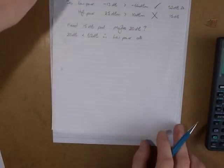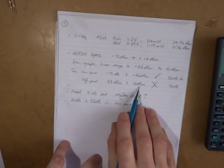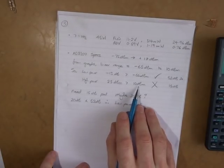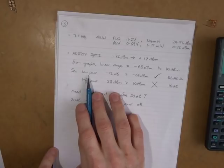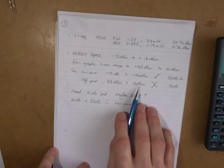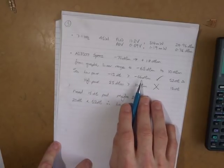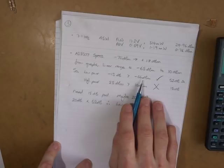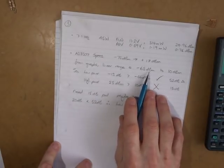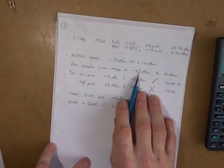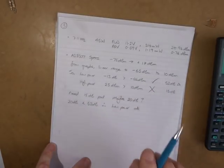Why was that useful? Because we wanted to make sure we weren't going to exceed the maximum allowable limit at the forward port or reflected port. We wanted to make sure we were also going to be detectable. We had said the most linear range for the AD8307 was minus 65 to plus 10 dBm. So that's the reason why we converted those to dBm — it also allowed us to compare directly to our spec sheet.